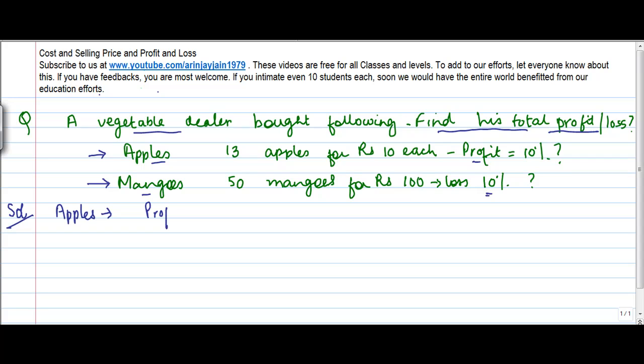So the profit for apples is going to be the selling price minus the cost price. Now what is the selling price? Well, I don't know. What is the cost price? I bought 13 apples for rupees 10 each, so my cost price is 13 into 10. So effectively it is selling price minus 130.